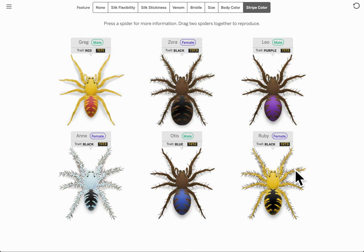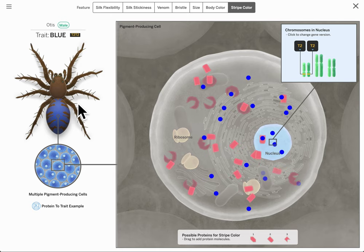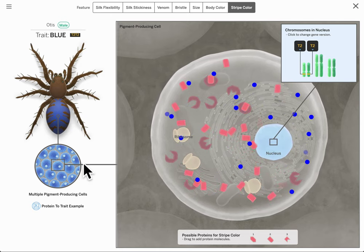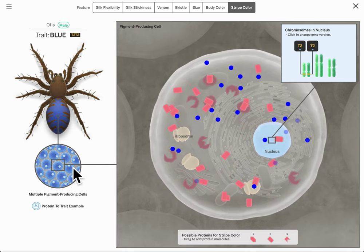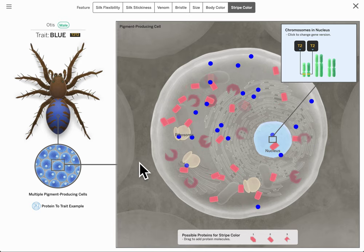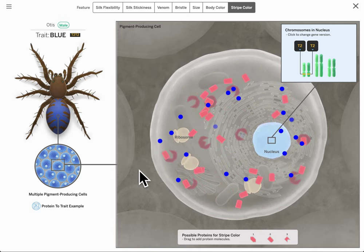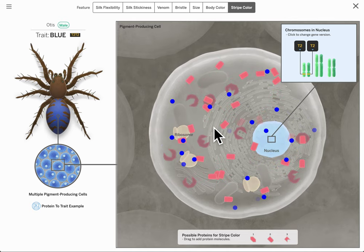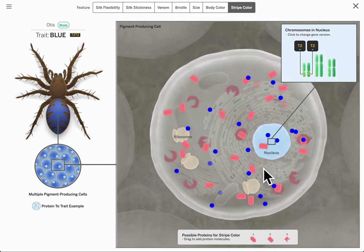We're going to look at Otis's cells, so I'm going to click on Otis and we see now his cells, the stuff that makes him up. This is a model of his cells and these pink shapes are the protein molecules. Notice that they fit together with one another and they produce a blue pigment. When they join together like this one, you can see some blue pigments popping out.